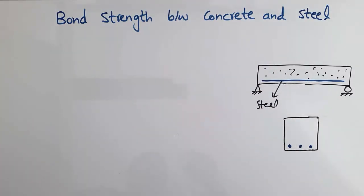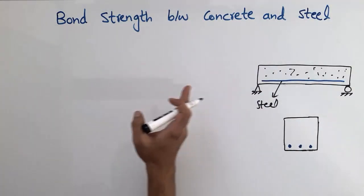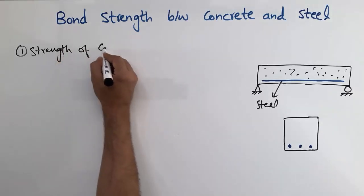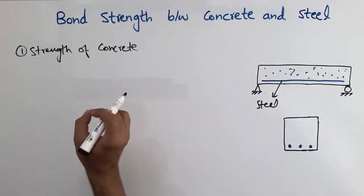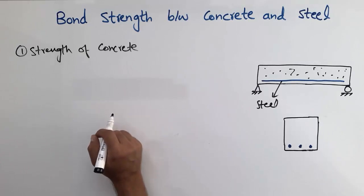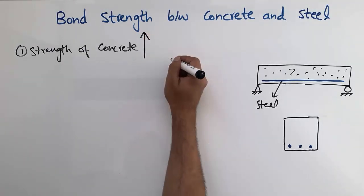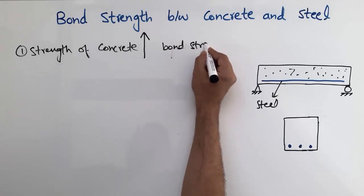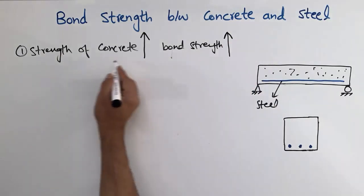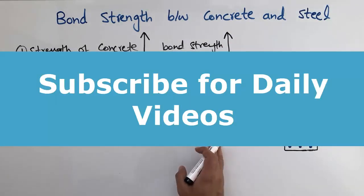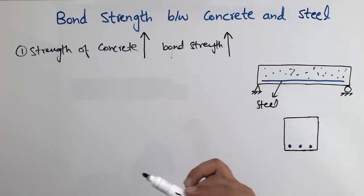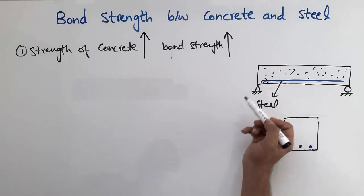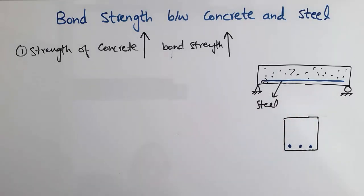The first factor which affects the bond strength between these two different materials is the concrete strength. If you have high strength of the concrete, then we have good bond strength between these two different materials. So if the strength of the concrete is higher, the bond strength will also be higher. For example, if you use 3,000 psi of concrete then we have less bond strength, but if you use 10,000 psi of concrete then we have higher bond strength between the steel and the concrete.